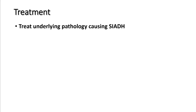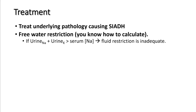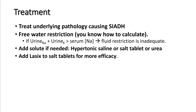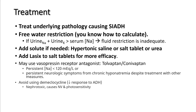For SIADH treatment: first, treat the underlying cause. Place the patient on free water restriction; check urine sodium and potassium to assess whether restriction is adequate. Calculate free water restriction using the formula discussed. Add solute if needed — hypertonic saline, salt tablets, or urea; Lasix can be added to salt tablets for better efficacy. Tolvaptan and demeclocycline are options mostly used in outpatient settings and are best managed by a nephrologist; try to avoid them in inpatient settings.